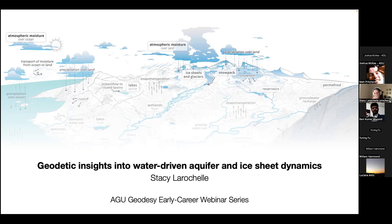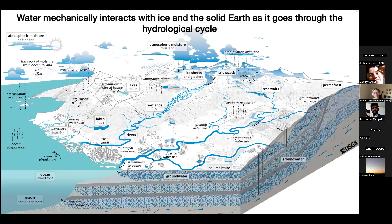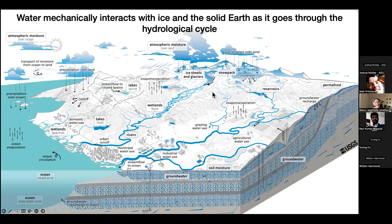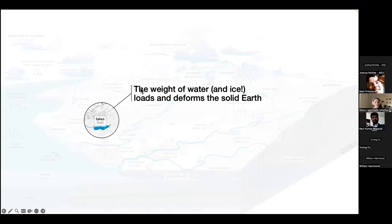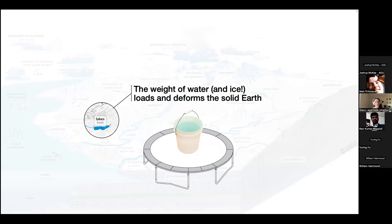I'd like to start with this slightly overwhelming but beautiful schematic from the USGS, which shows how we think water moves around on, above, and within the Earth. As water moves through this hydrological cycle, it mechanically interacts with the solids it comes across — namely the solid Earth and ice — and those interactions can have very important implications for society. As water moves around on Earth, that creates changes in the distribution of mass at or near the surface, making the solid Earth deform, similar to putting a bucket of water on a trampoline. This really happens with any changes in reservoirs of water, whether it's a lake, the oceans, groundwater, or even ice sheets.